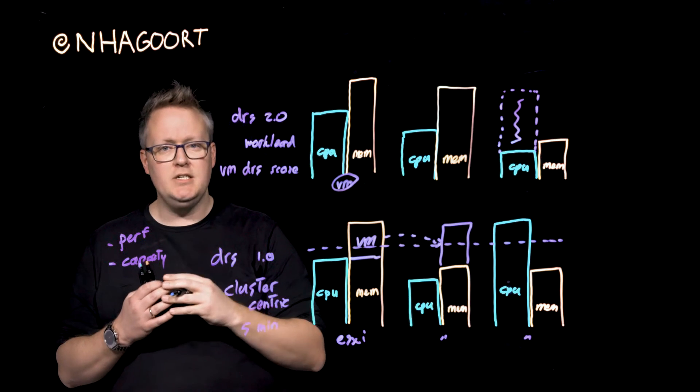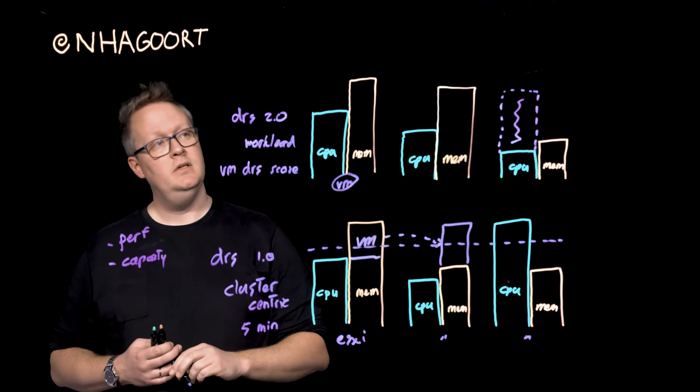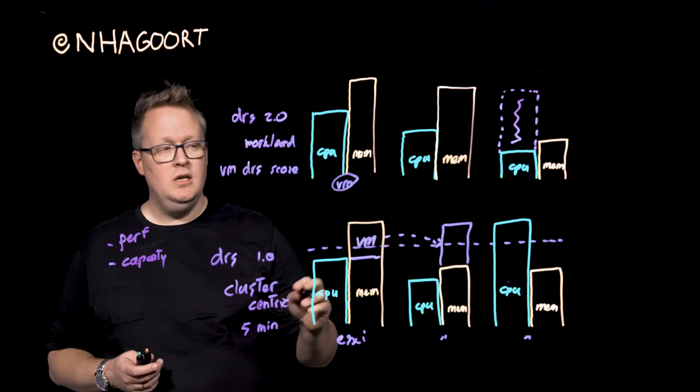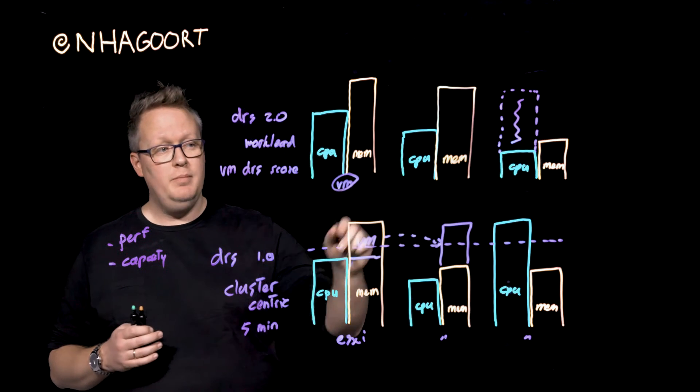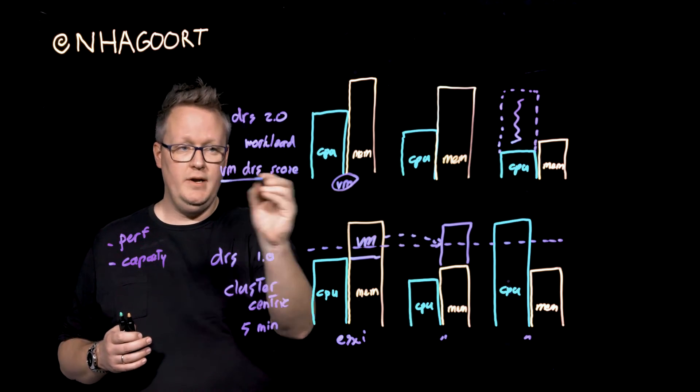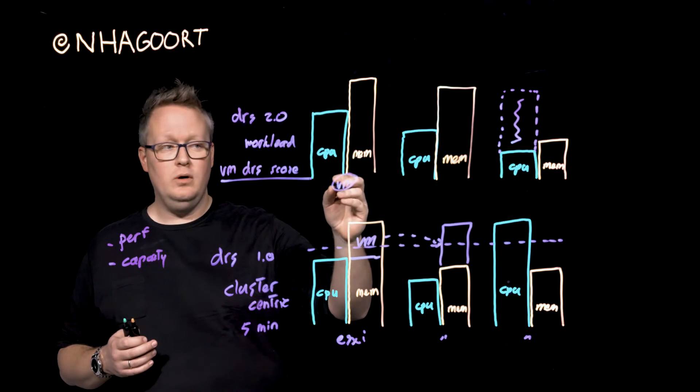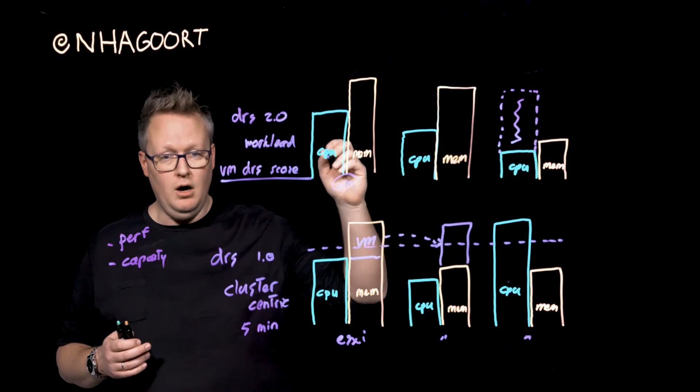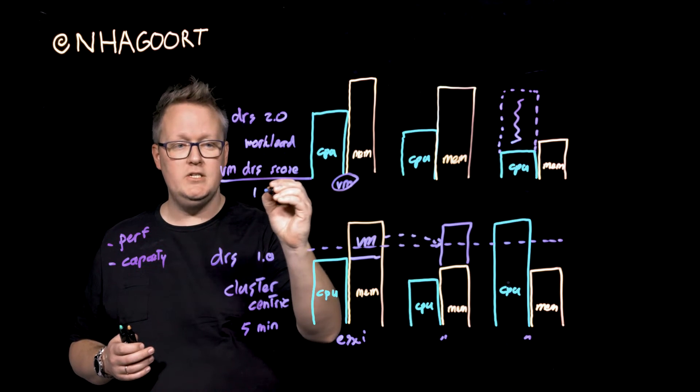And that is also something that we incorporate into the VM DRS score. So, can the application itself burst enough on the host that it is running on right now? So, all these things, and there's a lot more metrics in the background as well, basically come up with that VM DRS score. Now, we calculate that score for this specific virtual machine on each and every host in the cluster. And we will do so each and every minute.